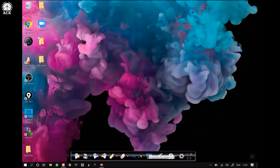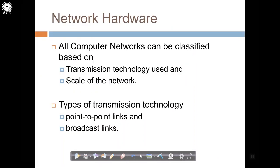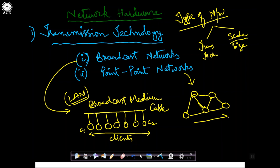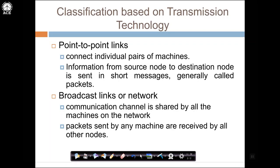Now I will show the same thing in the form of a PPT for a summarized discussion. All computer networks can be classified based on transmission technology and the scale of the network. In point-to-point networks, individual pairs of machines are connected and information from source to destination is sent in short messages, generally per packet. In broadcast networks, the communication channel is shared by all machines, and packets sent by any machine are received by all other nodes.